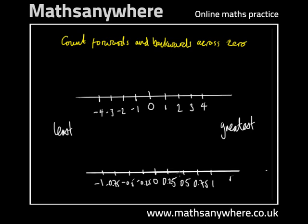And then using our example of decimals, counting backwards across zero would be 1, 0.75, 0.5, 0.25, 0, minus 0.25, minus 0.5, minus 0.75, and then minus 1. So that's how you'd count forwards and count backwards across zero.